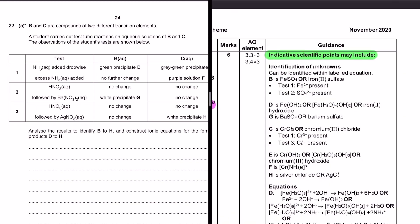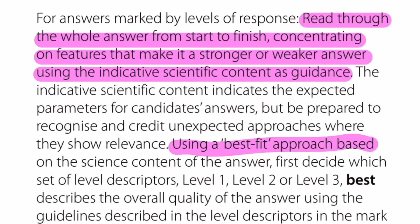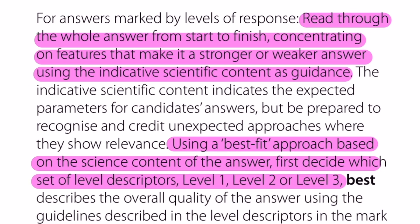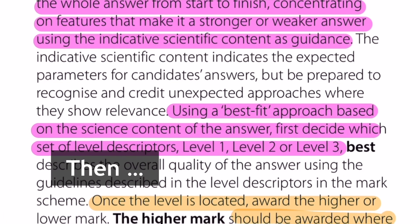They have a big list in these level of response mark schemes of indicative scientific information. You want to make sure that you are getting a vast majority of these points, but look out for the ors and instead ofs. Then, using a best fit approach on the science content of the answer, the allocation of level zero, one, two, or three is made.